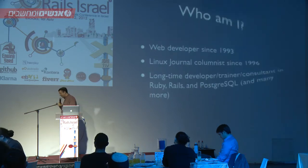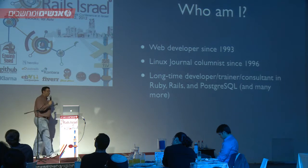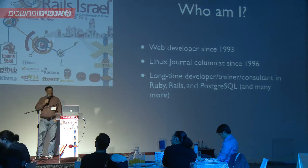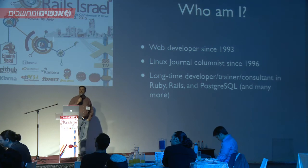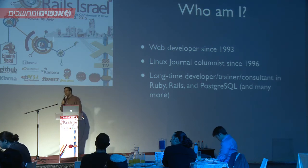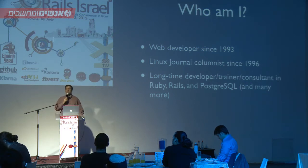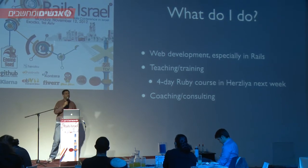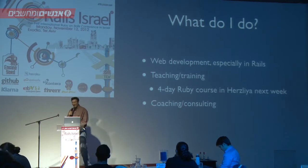Just a few words about myself: I've been doing web development since '93, writing a column in Linux Journal every month, more or less — almost always late — since 1996. I've been doing a lot of development, training, consulting, and working with people. Over the last seven years it's mostly been in Ruby on Rails, and I also do a lot of work with PostgreSQL and other open source technologies, both for people here in Israel and abroad. There's a Ruby course opening next week, so those of you who don't know Ruby are welcome to join us.